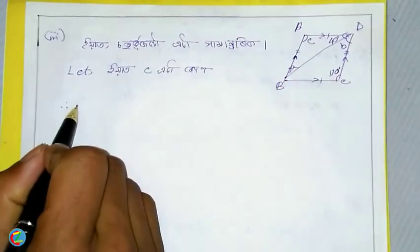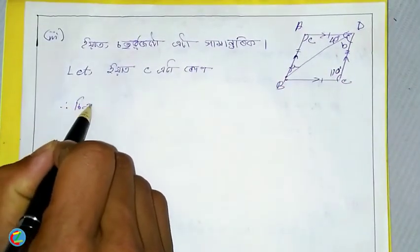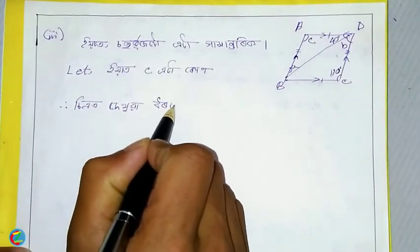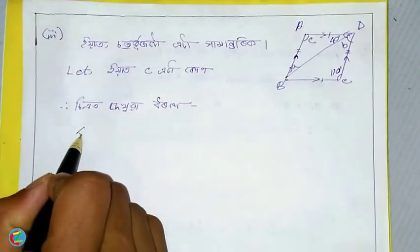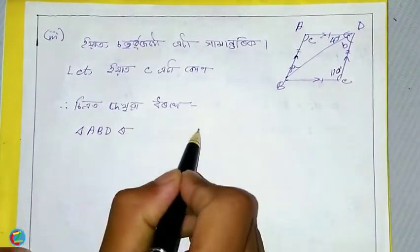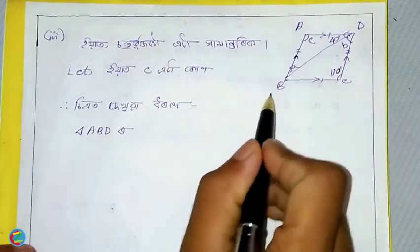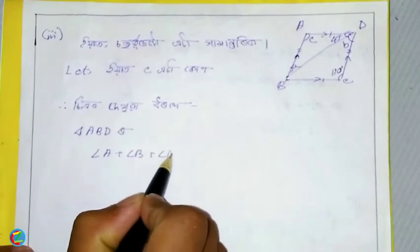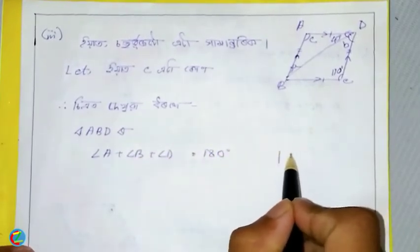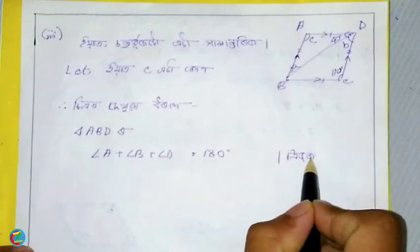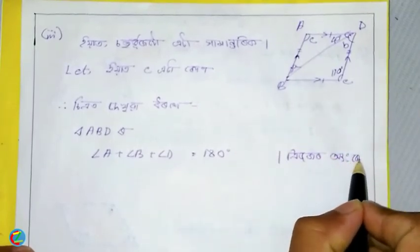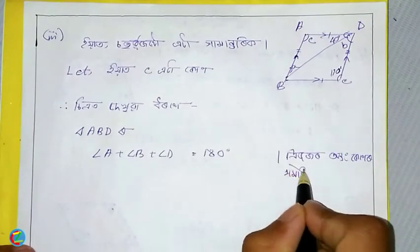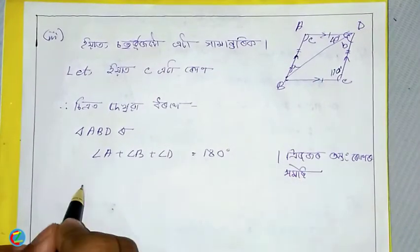I will do the same thing at the top. I will consider the triangle ABD. With triangle ABD, I will find that angle A is equal to 180 degrees.